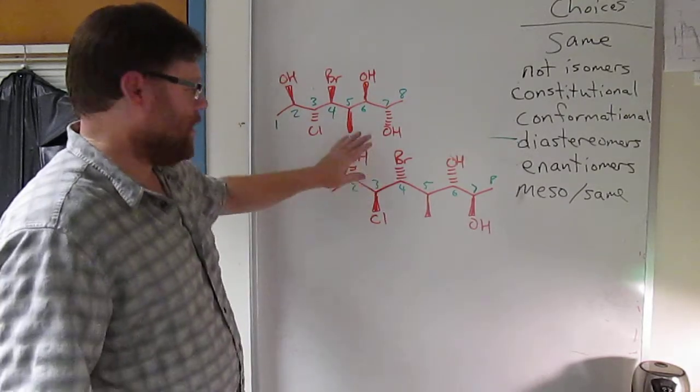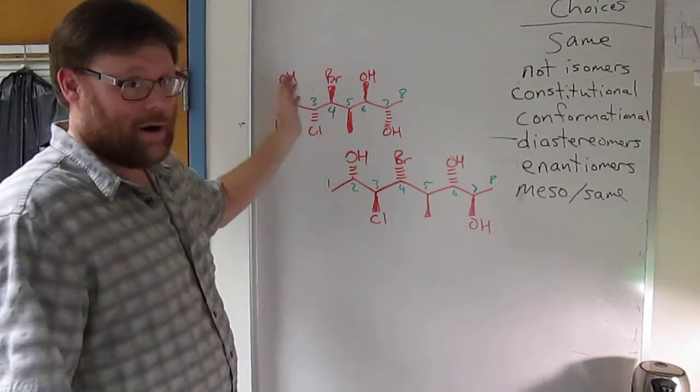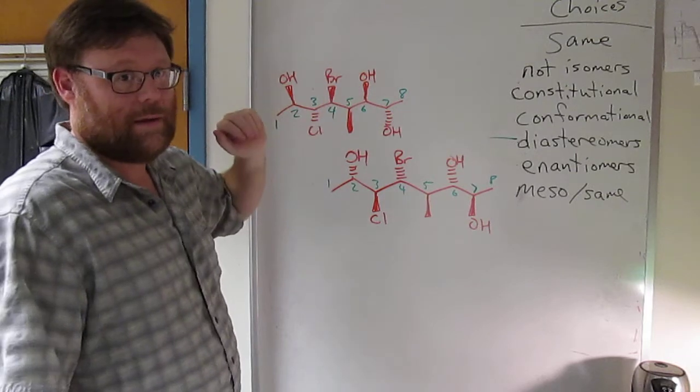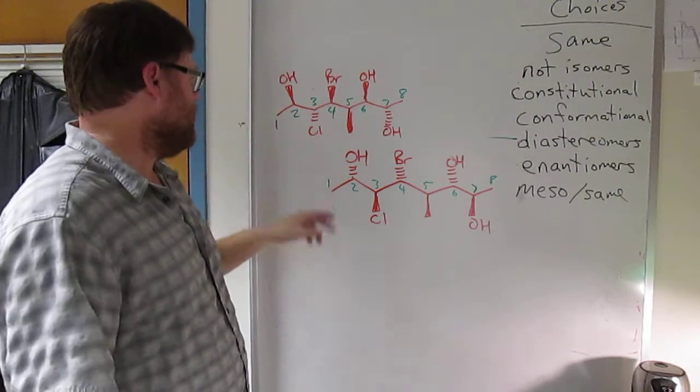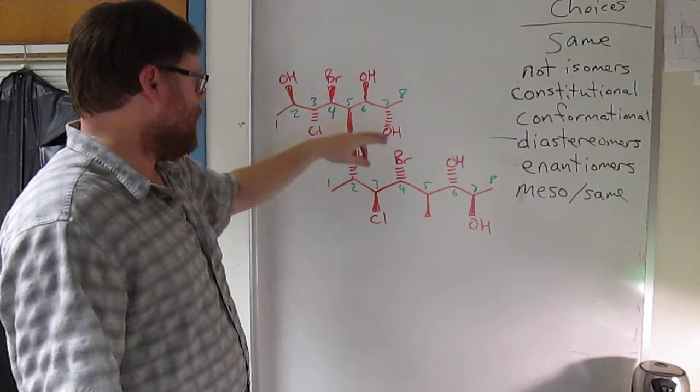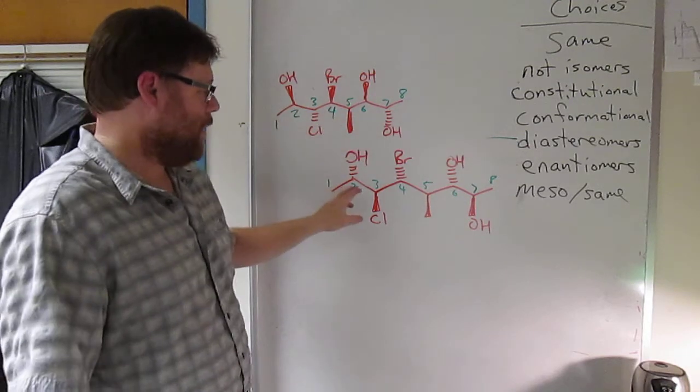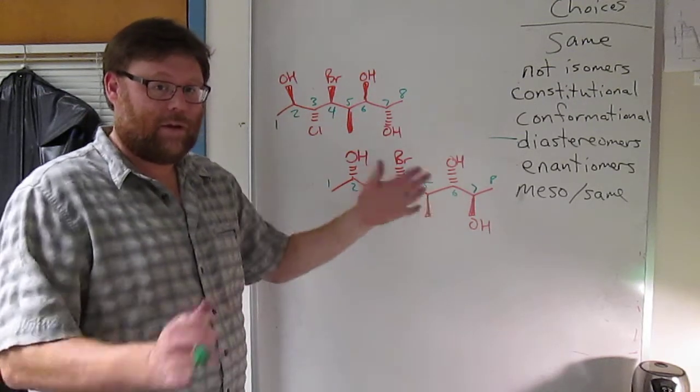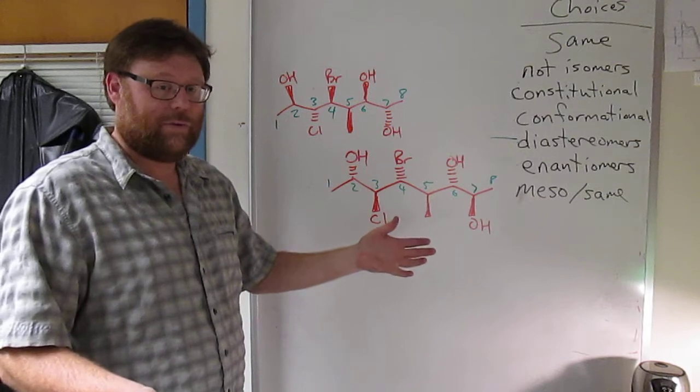And again, you might have to go through and actually do RS for all of these. But if you have eight chiral centers and they're all R, say in the top, and they're all S in the bottom, if they all change, the two molecules would be enantiomers.